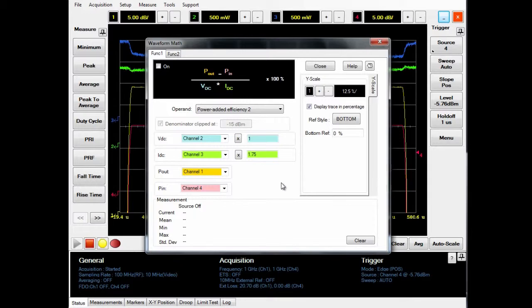Now we are looking at the PAE math formula window where we will assign sources 1 to 4 according to your setup. We have assigned RF out to channel 1, DC voltage to channel 2, DC current to channel 2 minus channel 3, and RF in to channel 4.